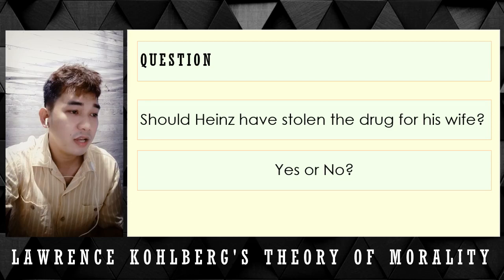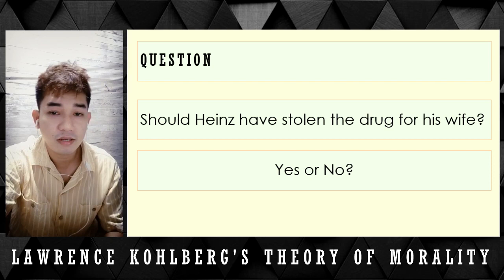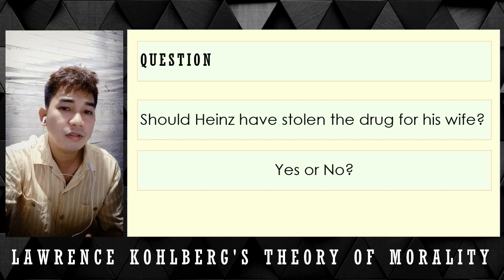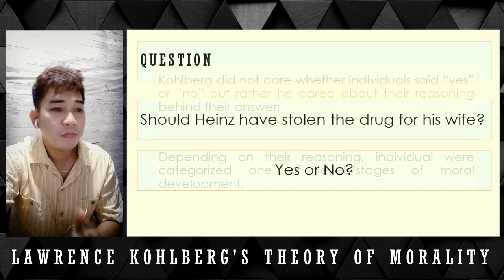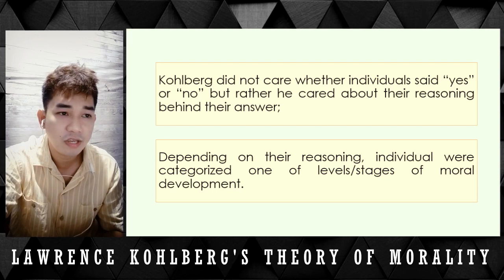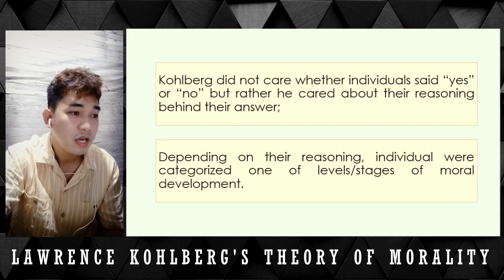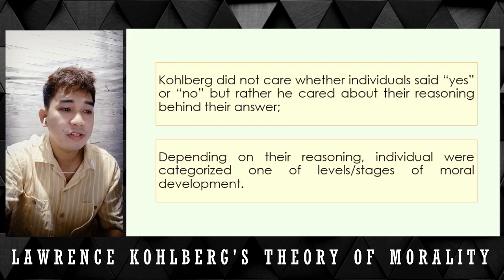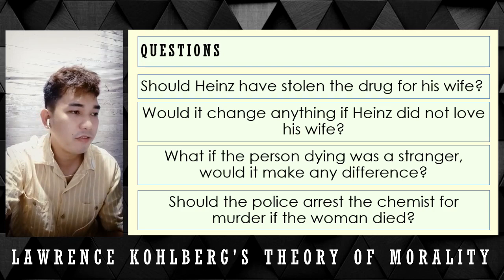So the question is: should Heinz have stolen the drug for his wife? You might answer yes or you might answer no. If Kohlberg asked you and you said either yes or no, Kohlberg actually did not care whether your answer was yes or no. He rather cared about the reasoning behind your answer. Depending on your reasoning, you would be categorized into the levels or stages of moral development.